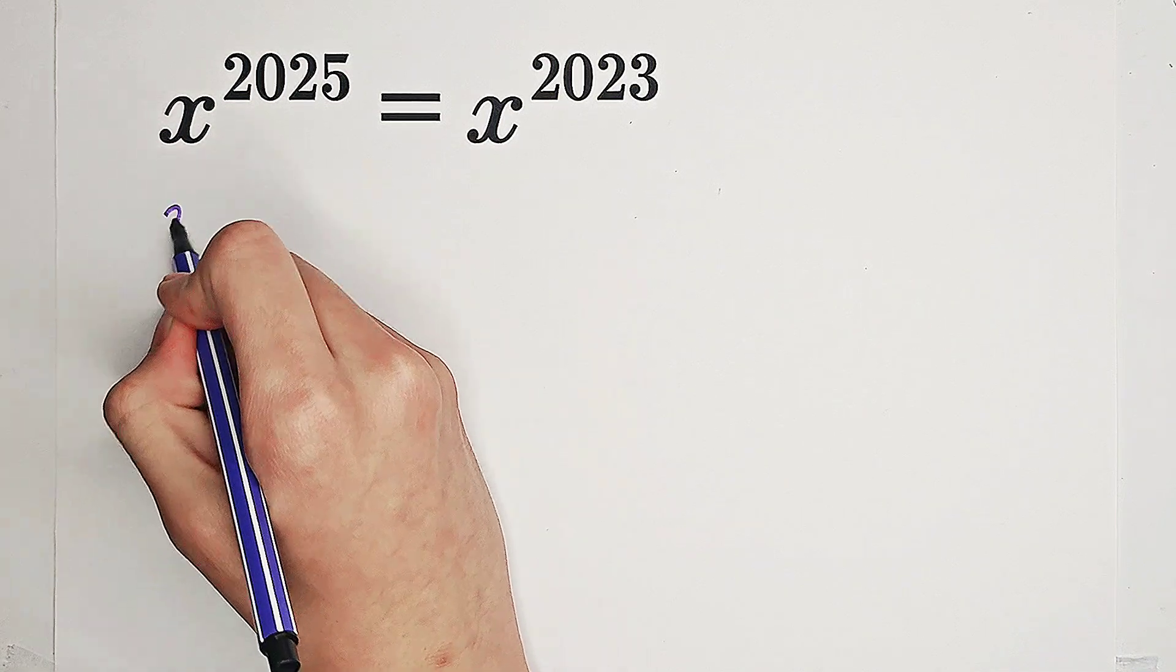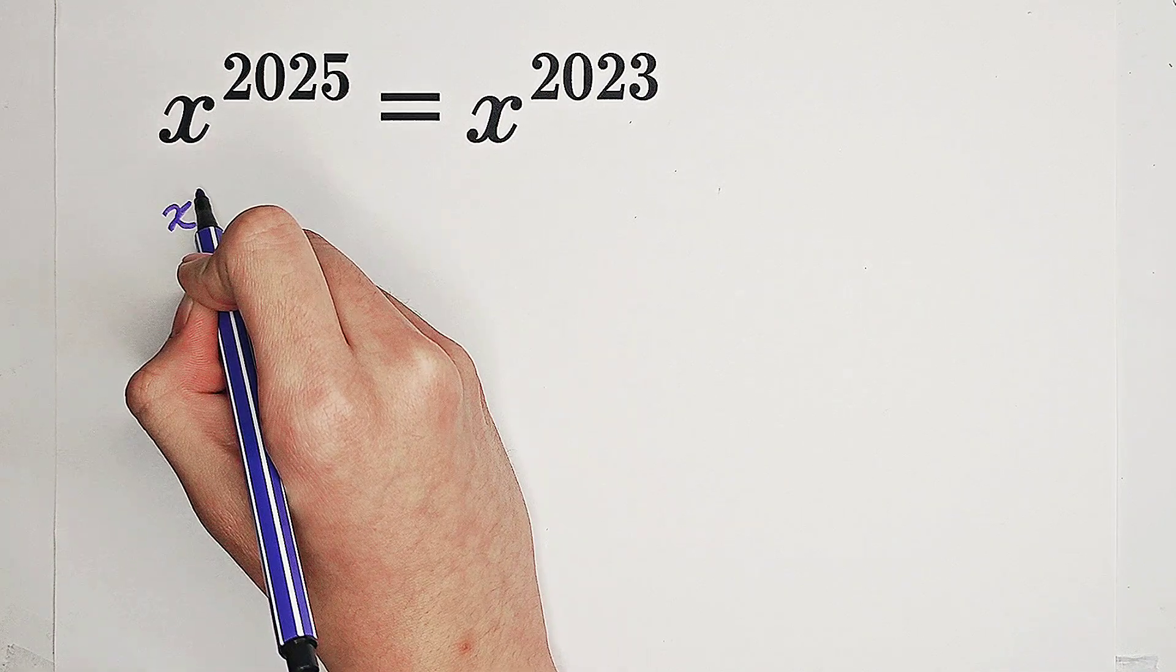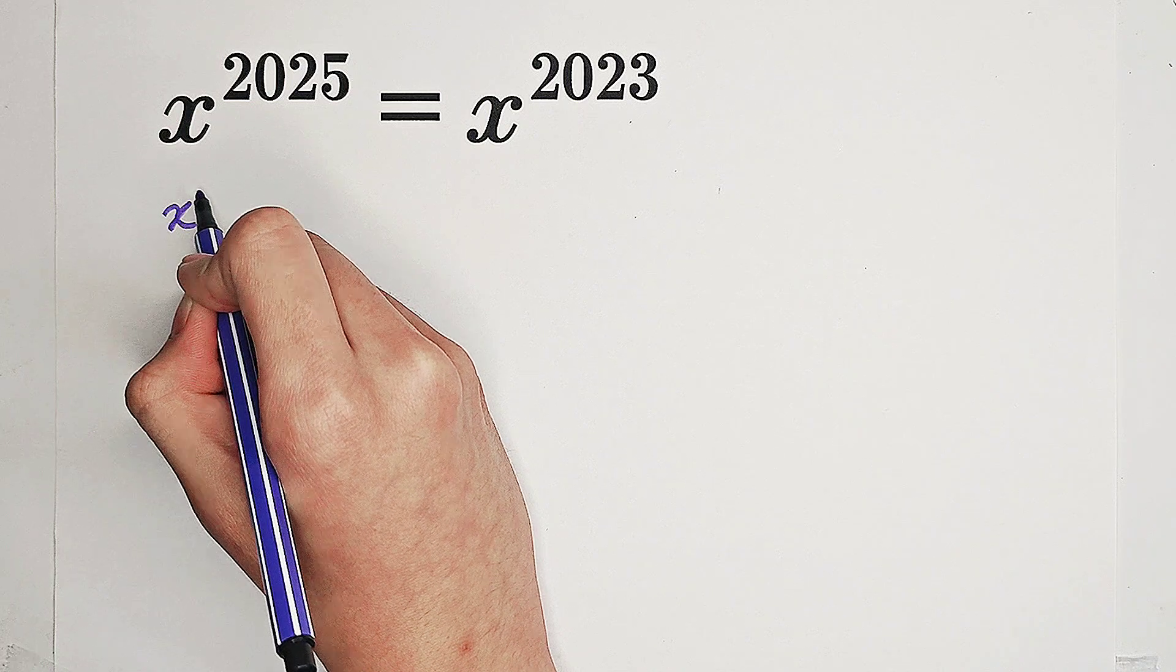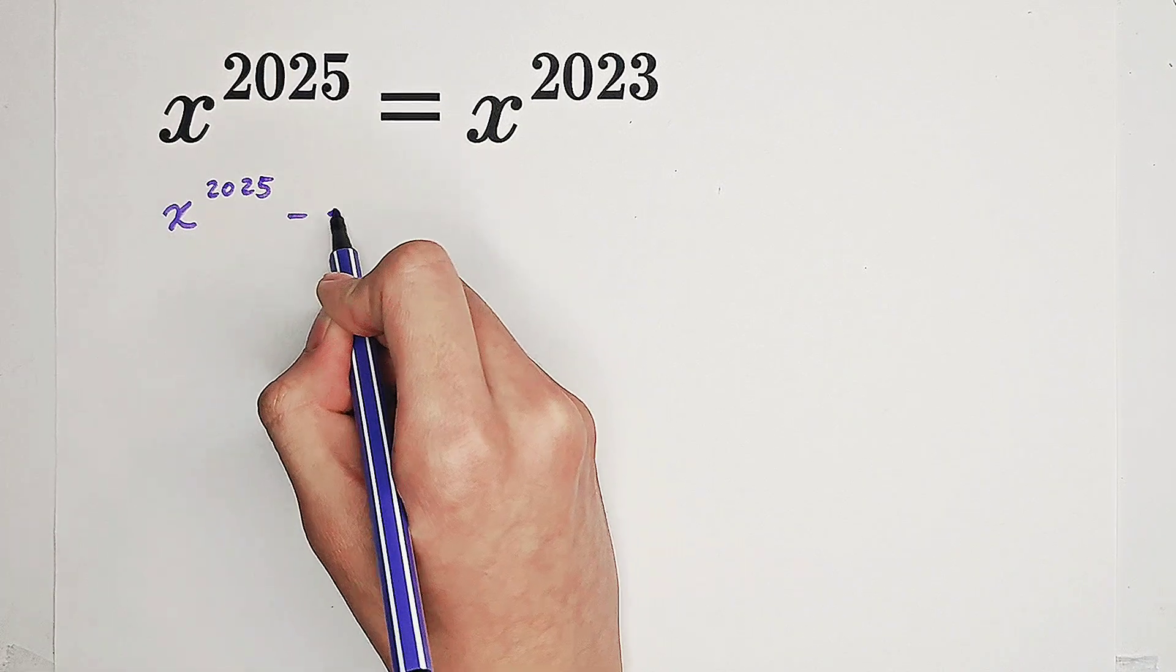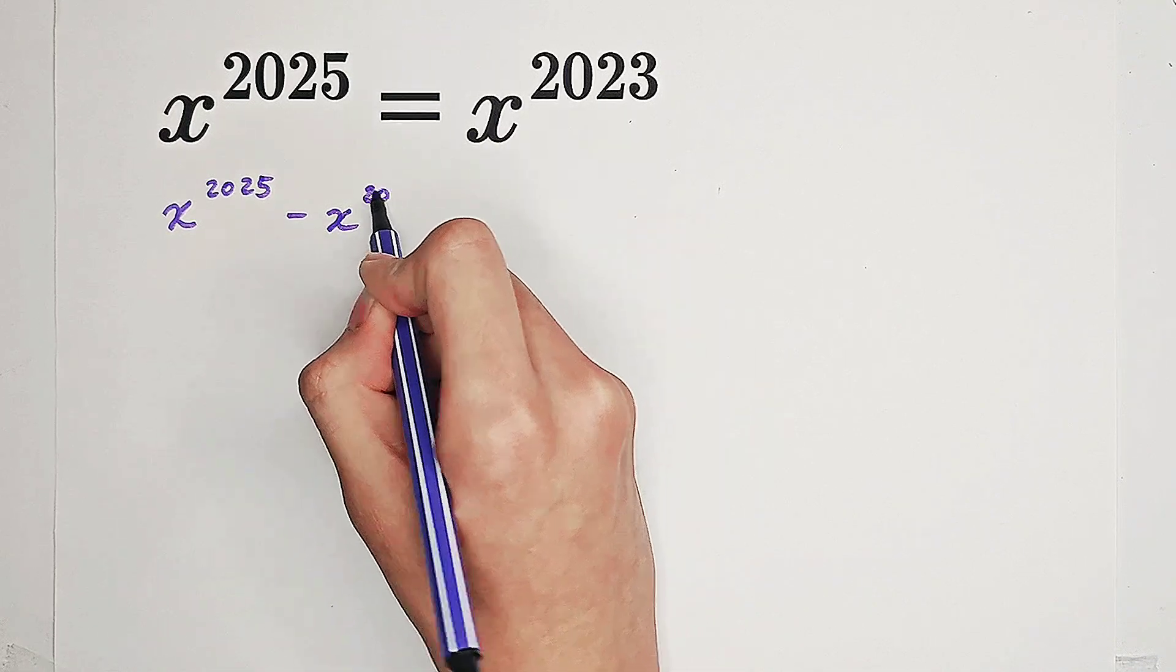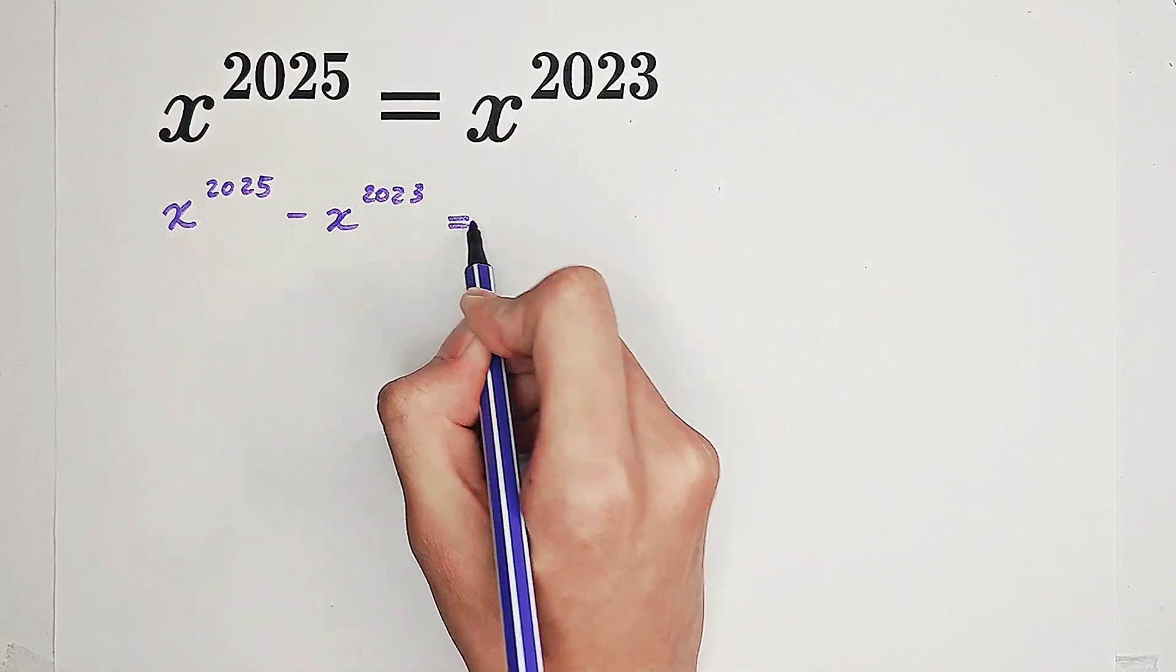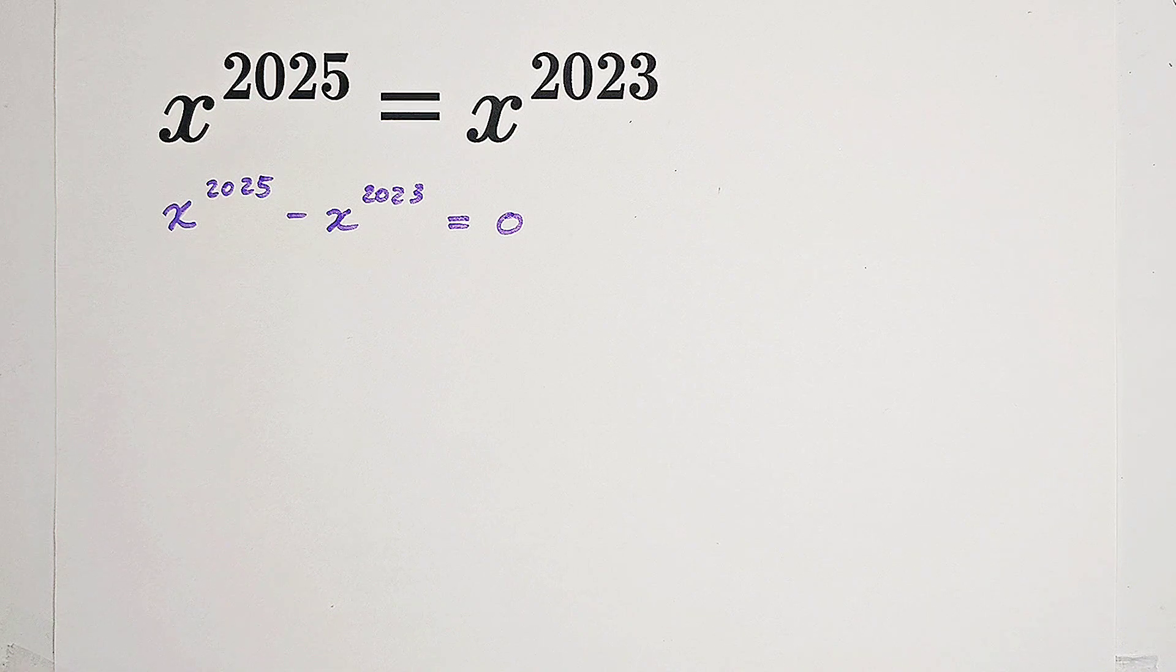Both sides have x to a power, so we can subtract x^2023 from both sides and we get this.